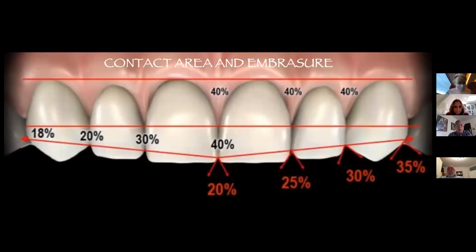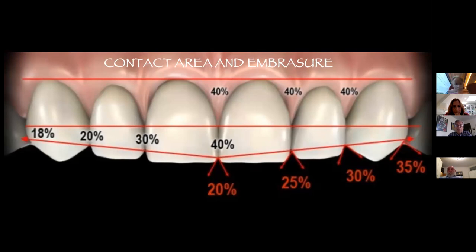When we first meet the patient, there are things we have to look at, and I'll go into more detail step by step. From work by Dr. Steve Chu and Dr. Stappert: incisal embrasures increase as you go posteriorly, and contacts decrease as you go posteriorly. You also have to look at the papilla — ideally about 40% in the ideal situation.